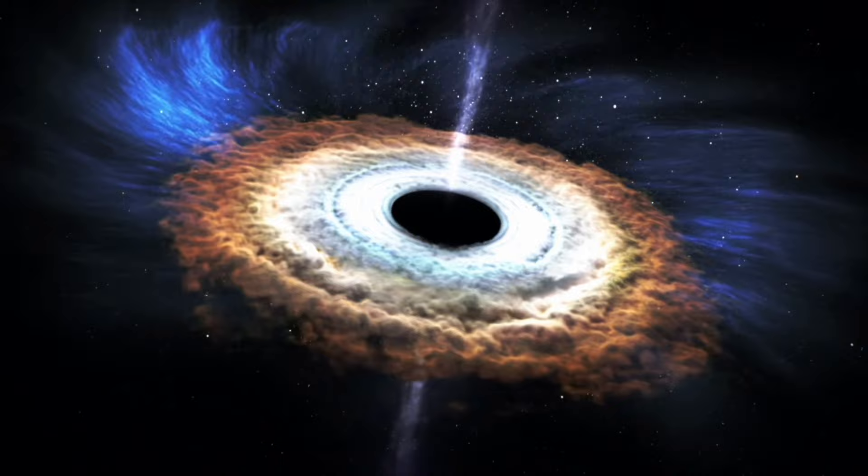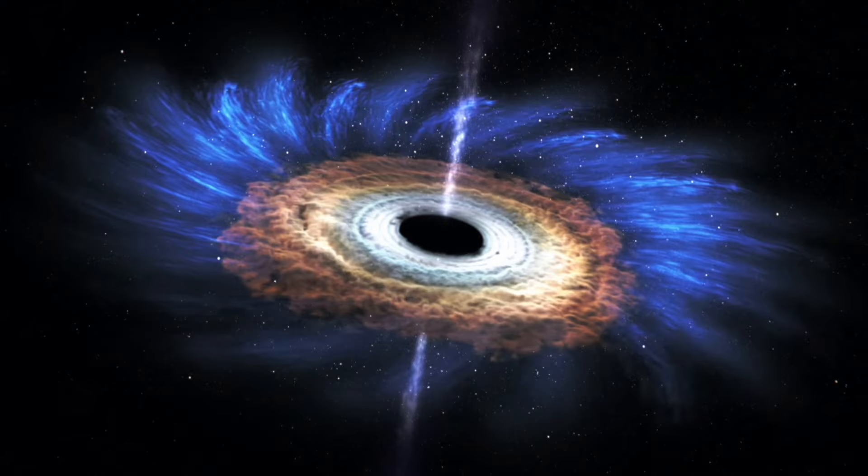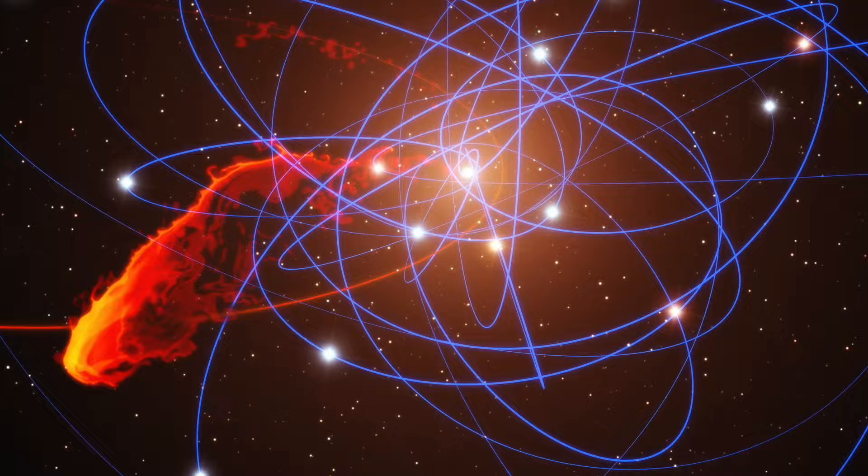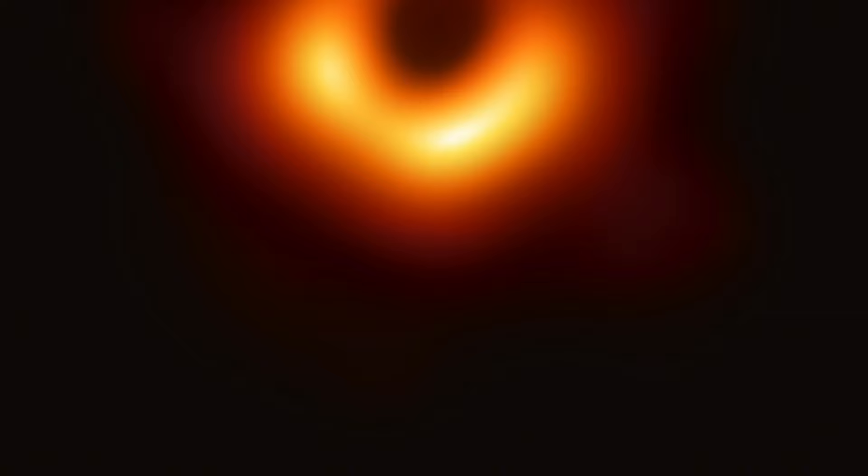Assuming general relativity holds near the event horizon, the radio emissions from Sagittarius A-star do not originate directly from the black hole, but stem from a bright region near it, likely in the accretion disk or a relativistic jet.